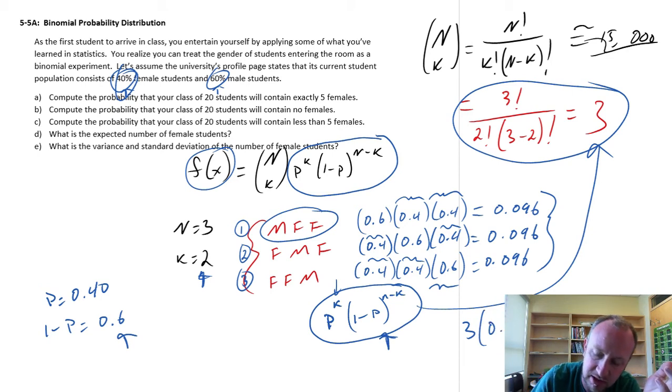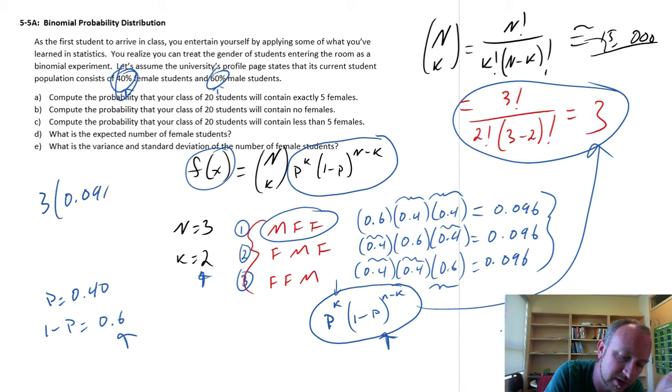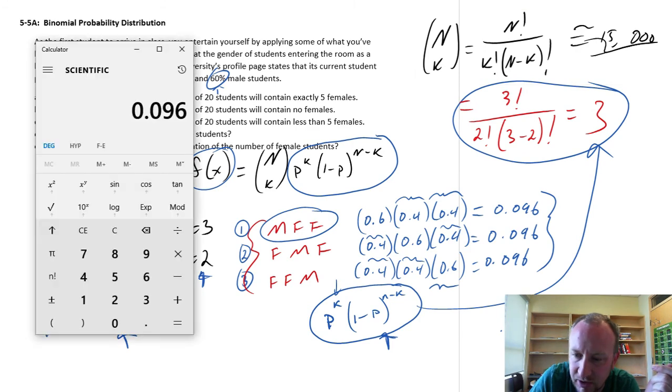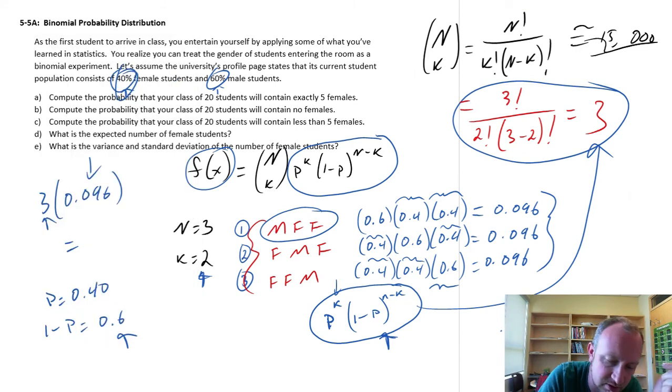I'm writing right behind my face. Let's do it over here. 3 times 0.096, three possible outcomes, a probability of 0.096 associated with each of them. And so this gives us a probability of 0.288.